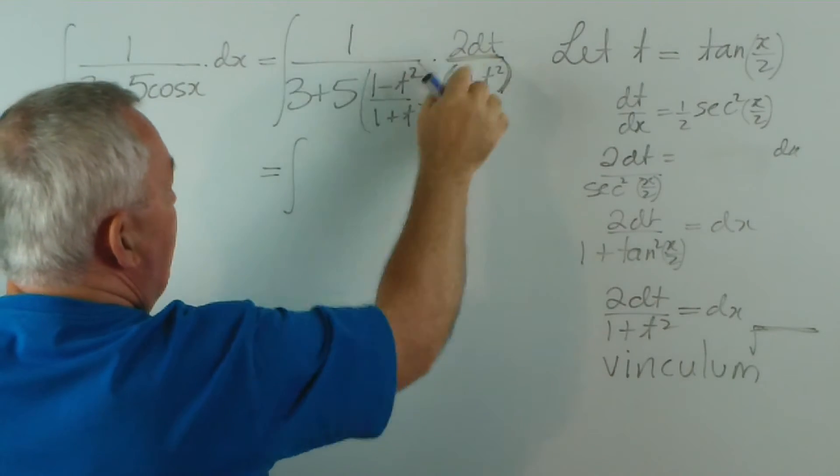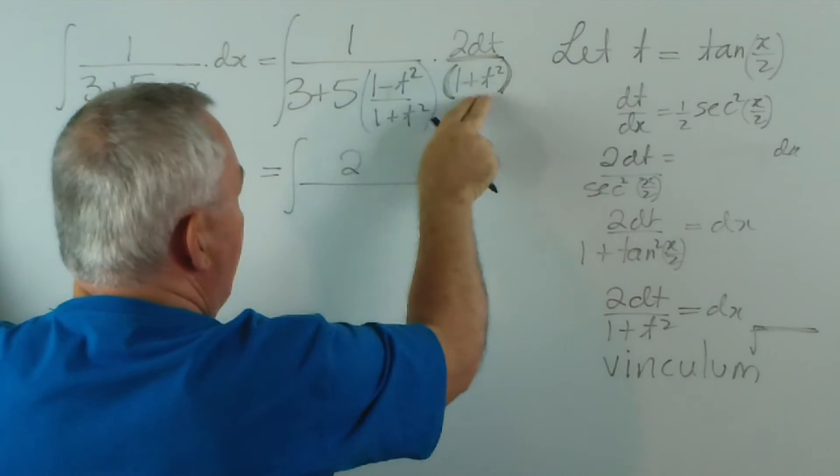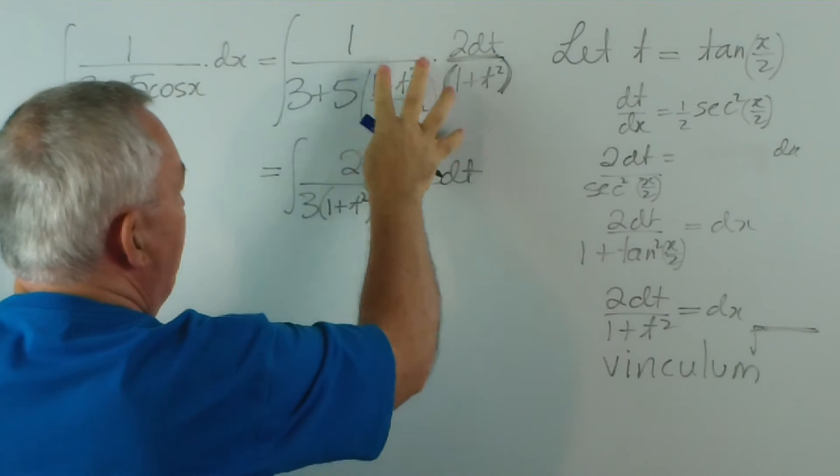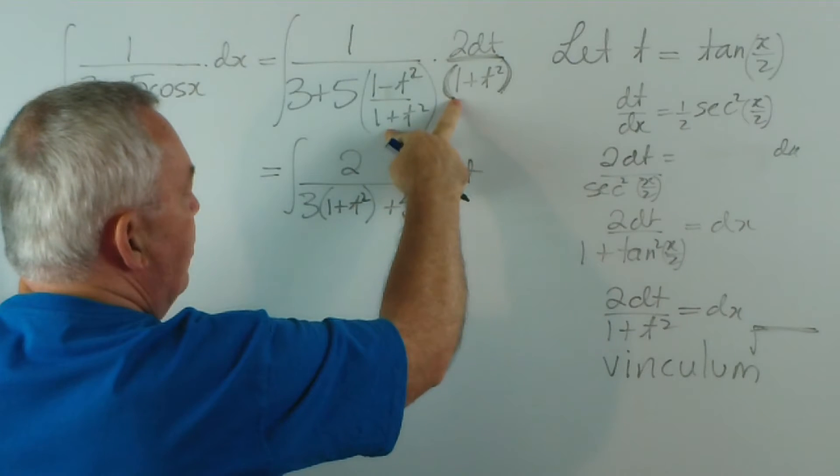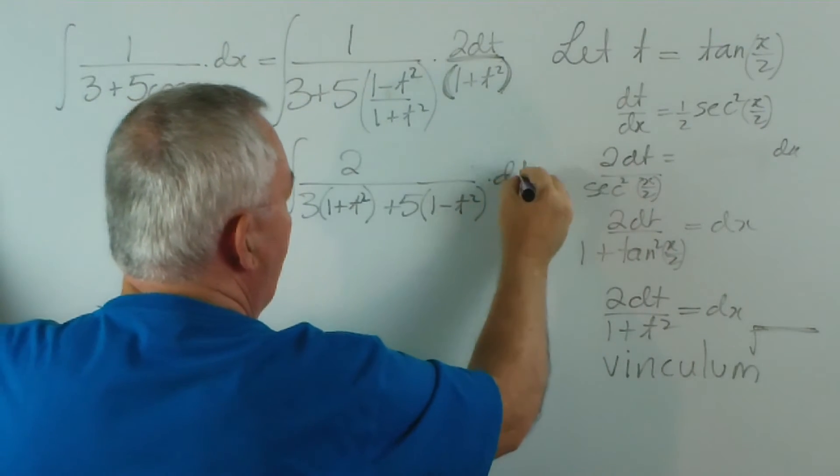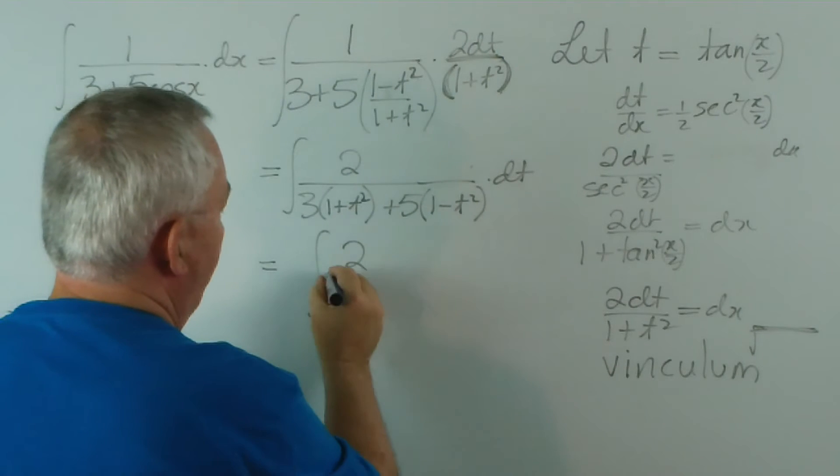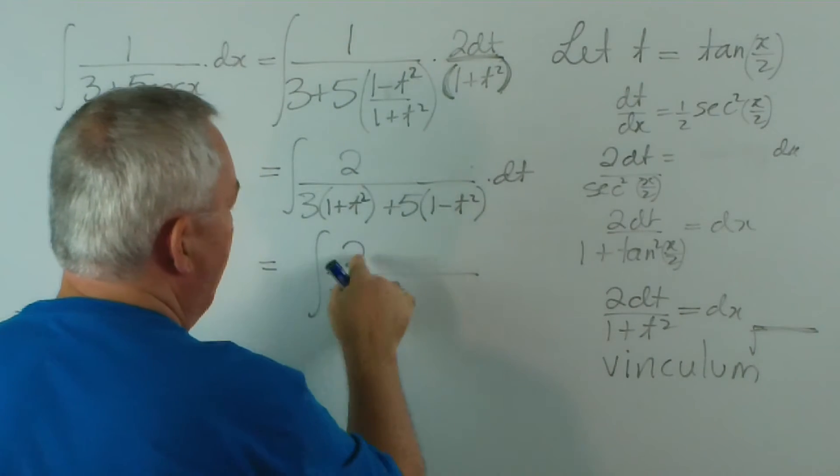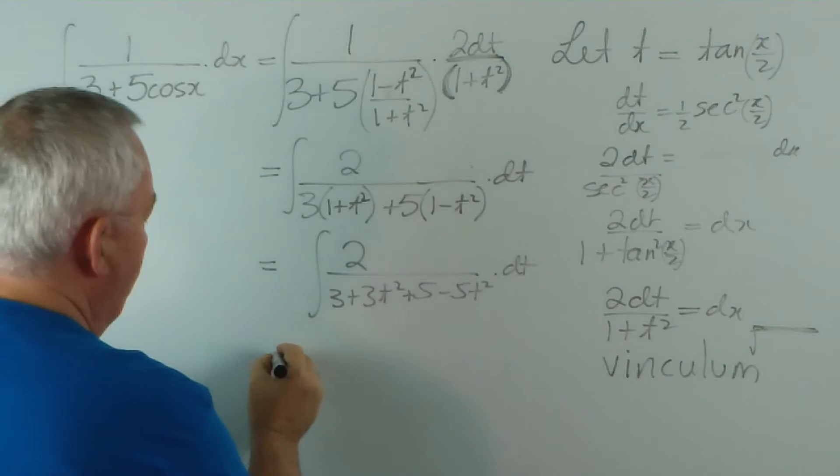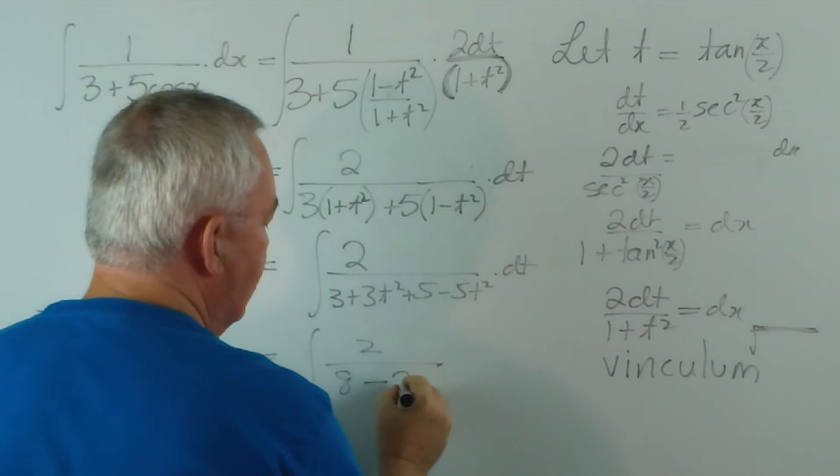Now, 1 times 2 dt is 2 dt. We're going to multiply out. 3 times this, I'm going to just write as 3 lots of 1 plus t squared, and 5 lots of this times this—the 1 plus t squareds divide out—and we're left with 1 minus t squared.